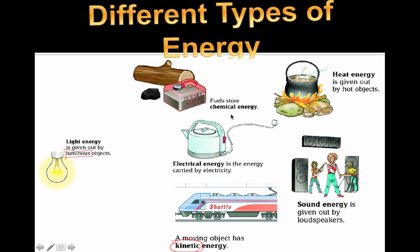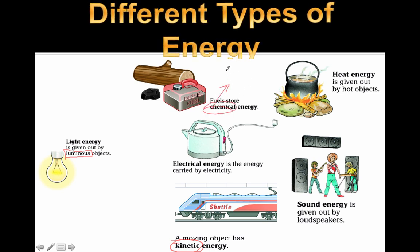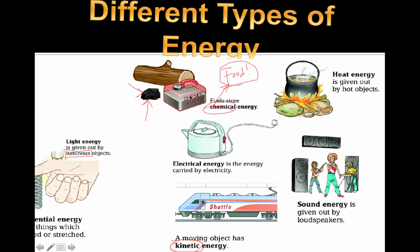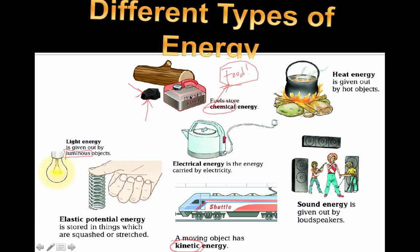Fuel stores chemical energy. Chemical energy — we're also talking about food. Any kind of energy stored in food is called chemical energy. Coal, burning wood, fuel — these are all types of chemical energy.